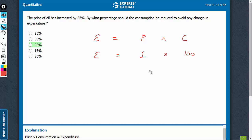Now, price has increased by 25%. So, 1 has become 1.25. They say that the expenditure should remain the same. So, 100 should remain 100.